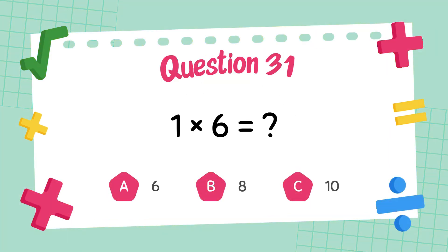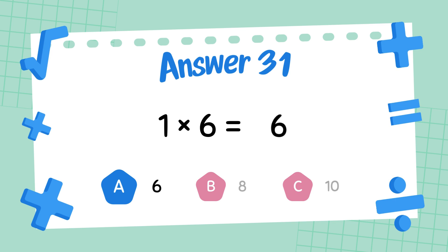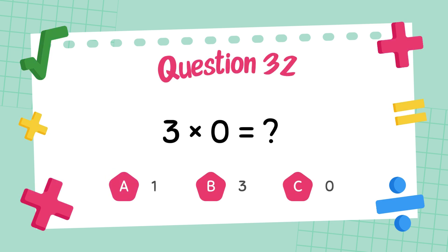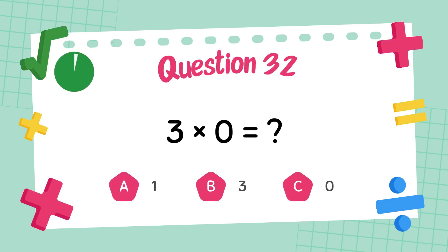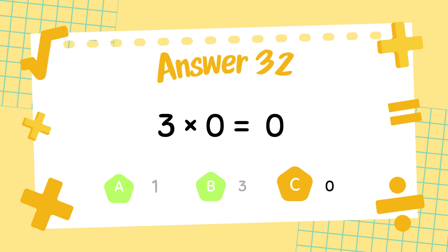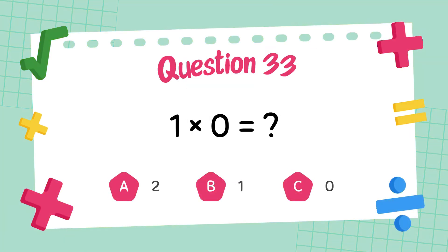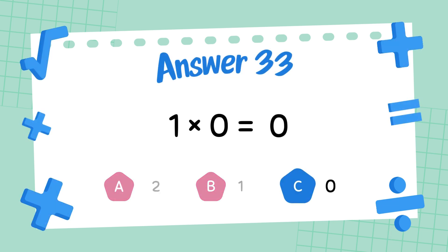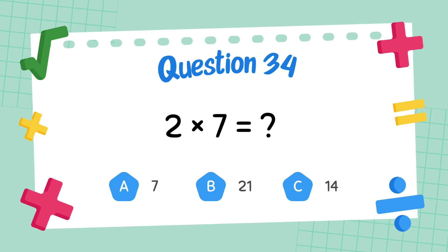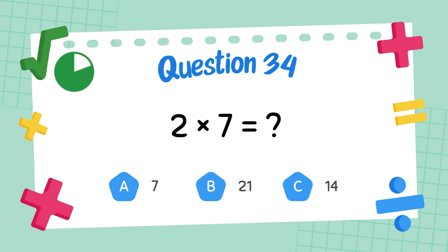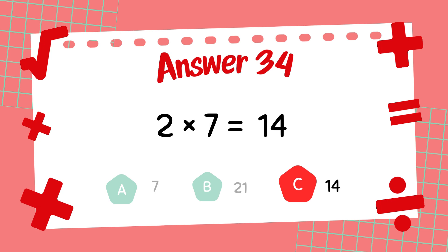What is 1 times 6? The answer is 6. What is 3 times 0? The answer is 0. What is 1 times 0? The answer is 0.